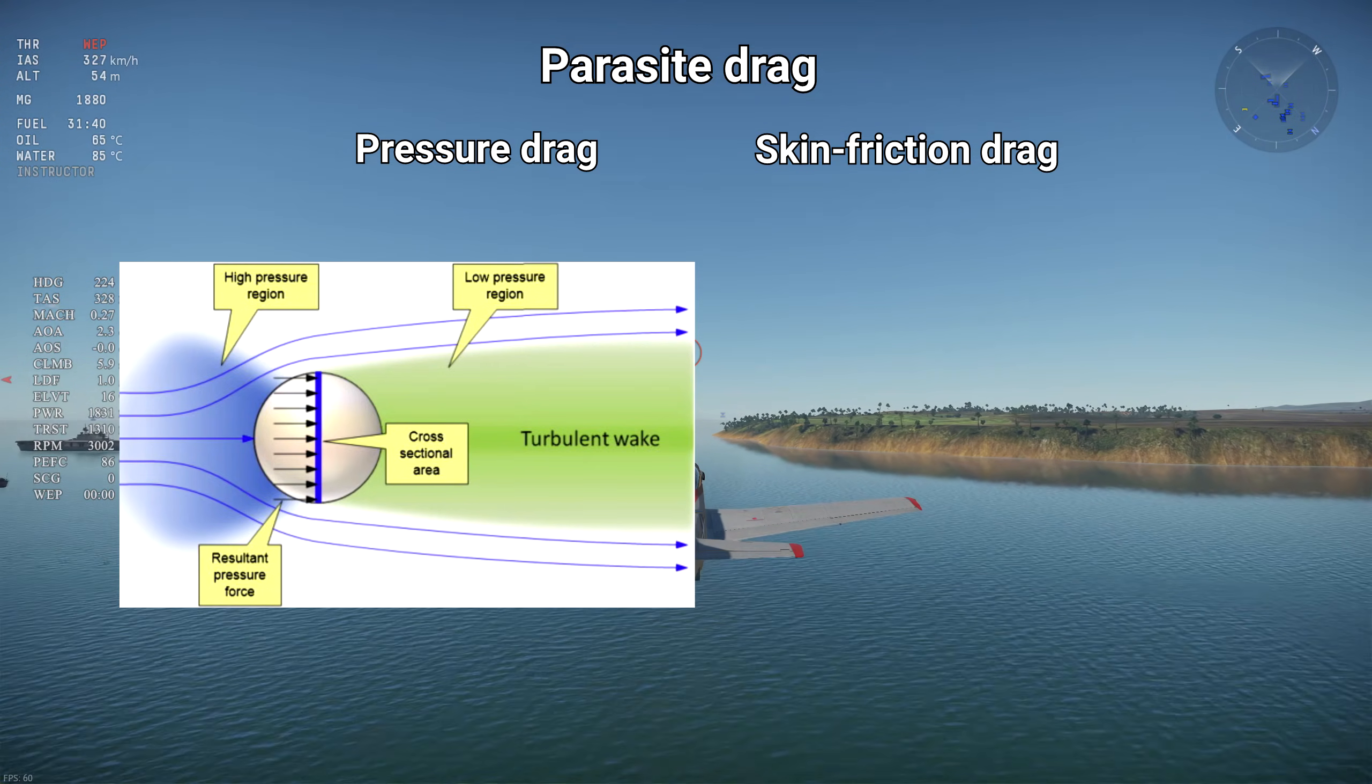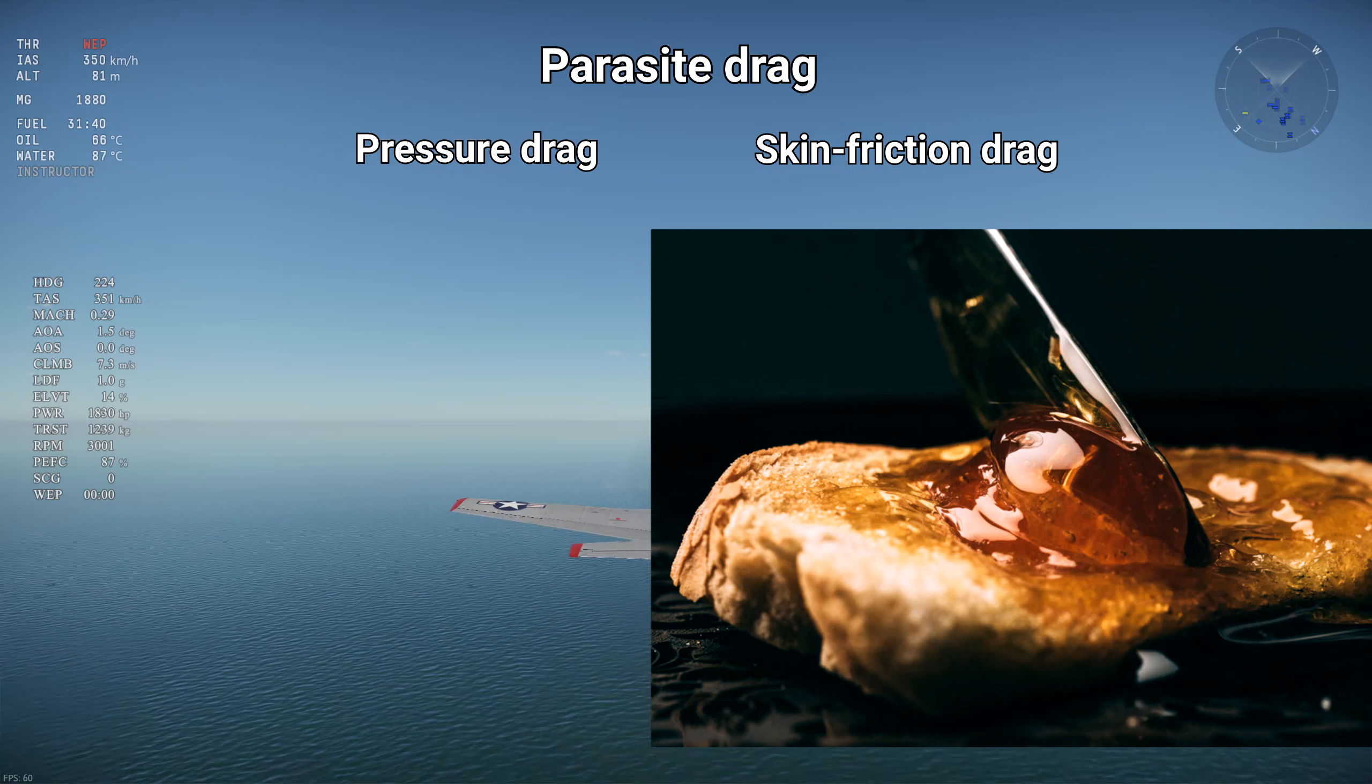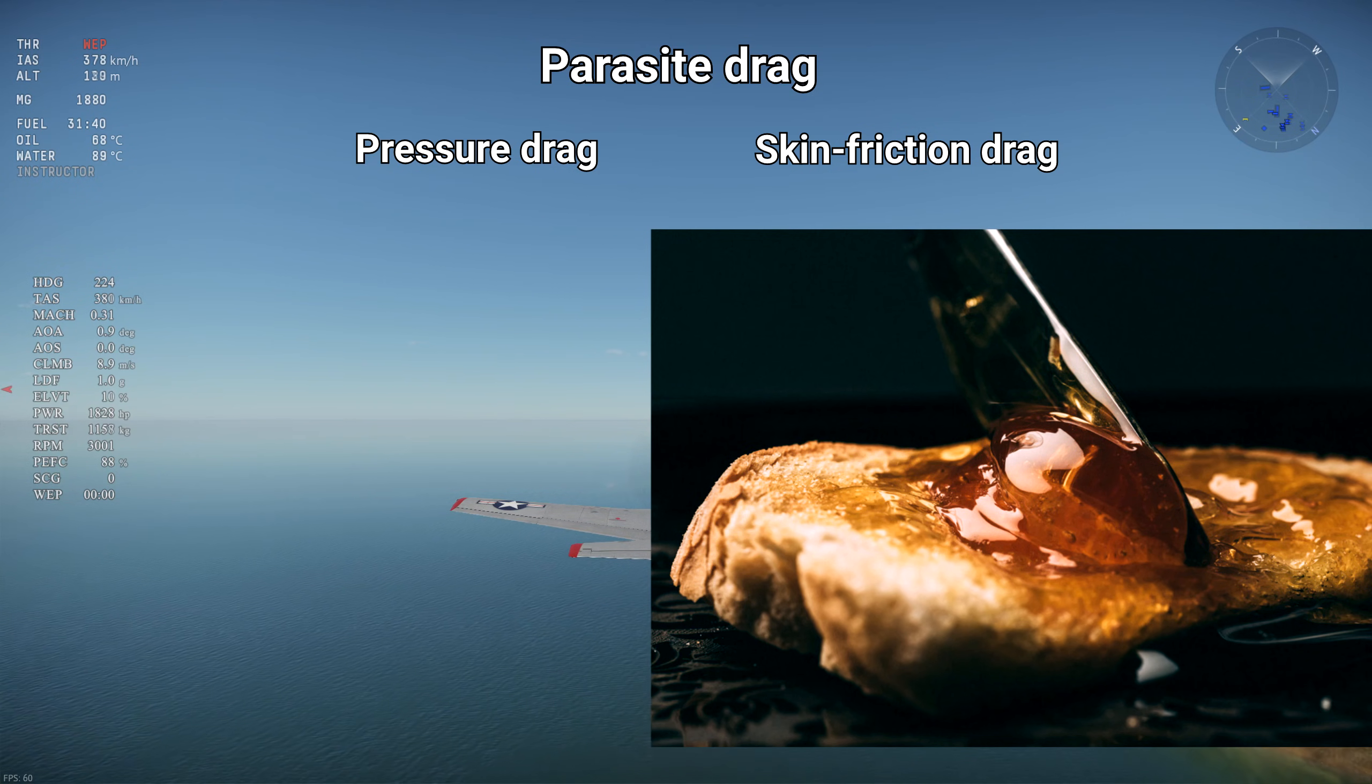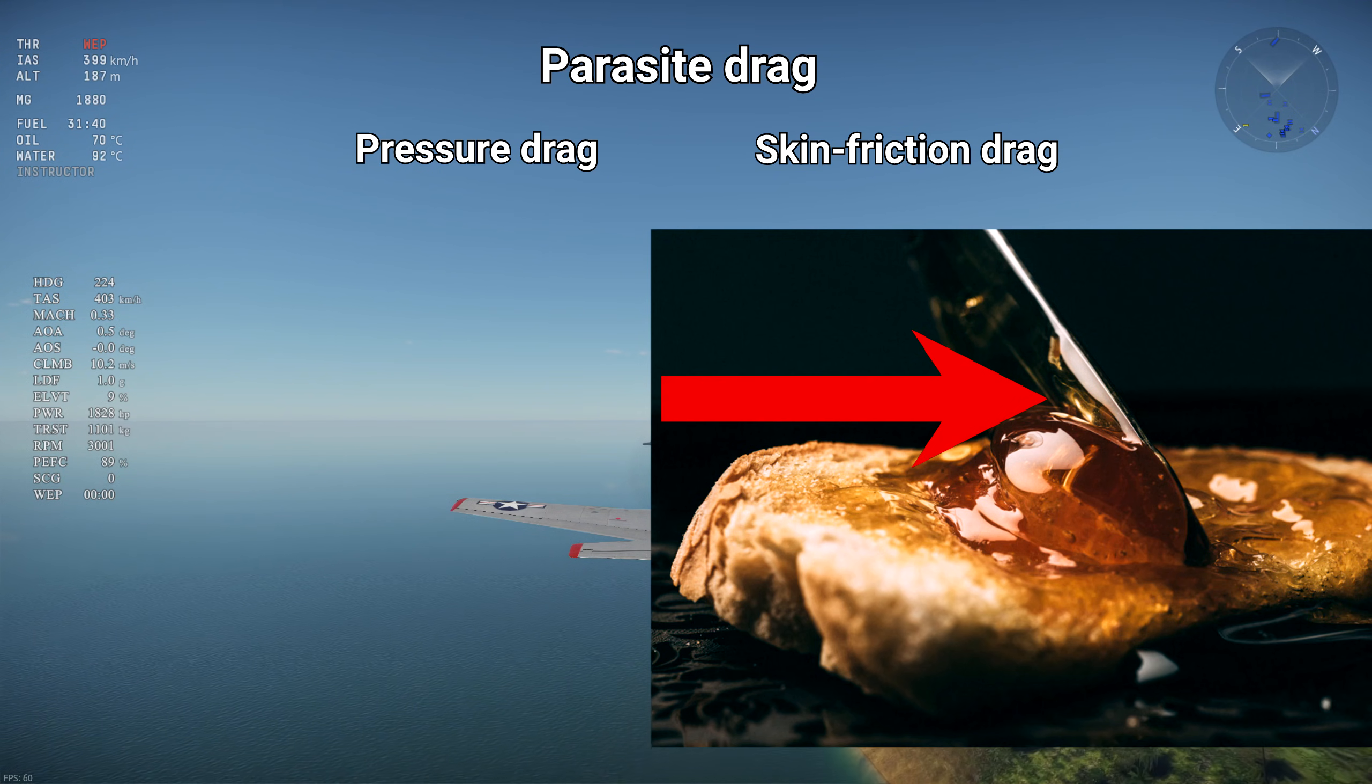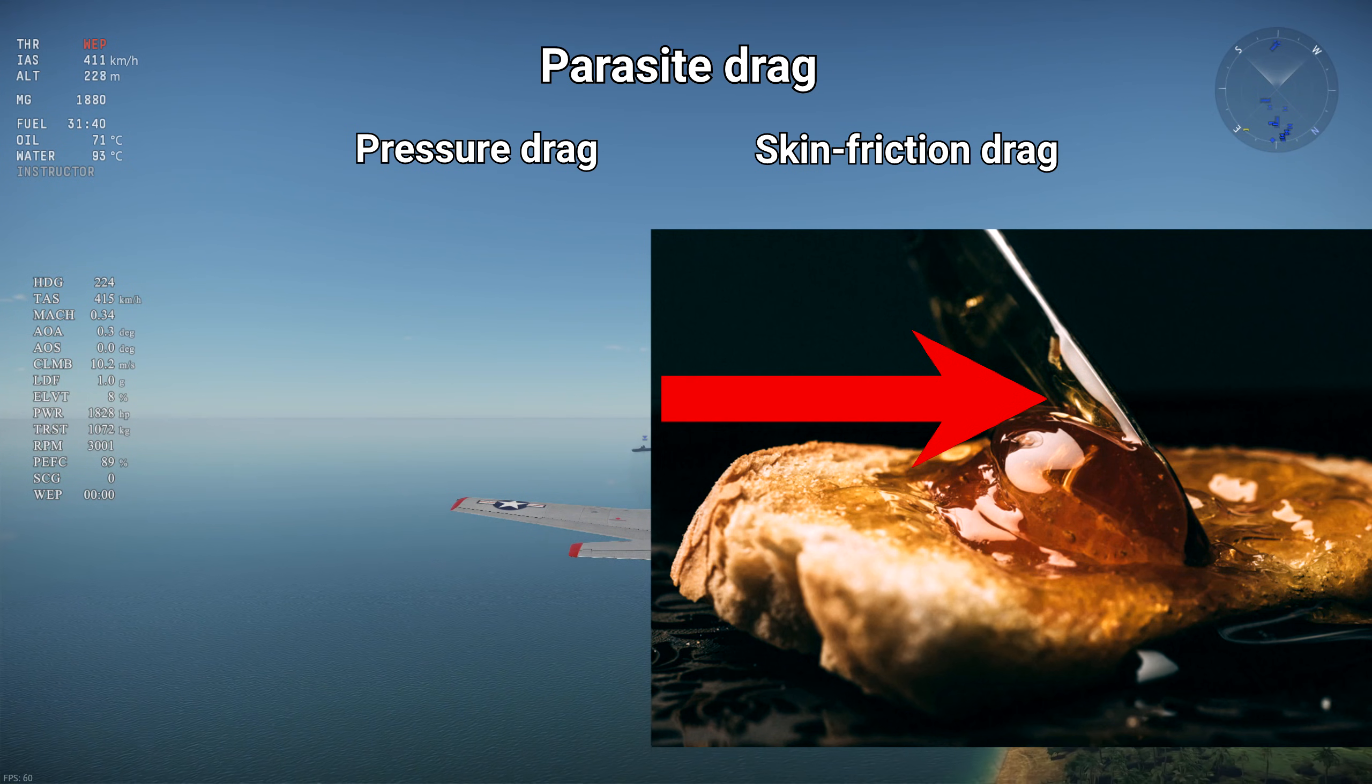Skin friction drag is a bit more difficult to visualize. Imagine you're spreading honey on bread. You'll need to exert force on the knife to adequately spread the honey, and that's because the honey's high viscosity makes its molecules stick to the knife, and as they slide across the knife and onto the bread, it exerts force on the knife, slowing it down and forcing you to exert an equal force to keep going.